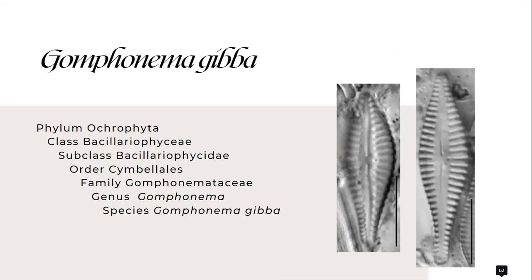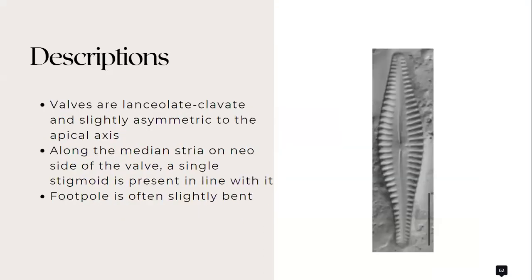As for Gomphonema giba from the family Gomphonemataceae, its valves are lanceolate, clavate, and slightly asymmetric to the apical axis.